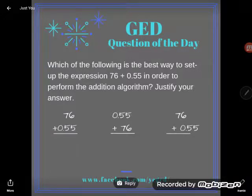Hey GED students, it's GED question of the day time and I've got a weird one. Which of the following is the best way to set up the expression 76 plus—and now most of you guys read that as 0.55, but actually I would read that as 55 hundredths—in order to perform the addition algorithm? Justify your answer.